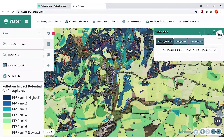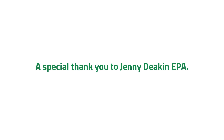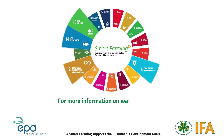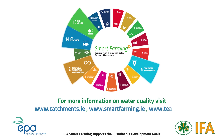Once you've used the maps and determined whether you're in a nitrate risk area or a phosphorus risk area, you can talk to your local advisors to figure out what the best actions are to protect your local water quality. To learn more about how to improve water quality in your area, visit catchments.ie, smartfarming.ie, or agras.ie, or speak to your local advisor.